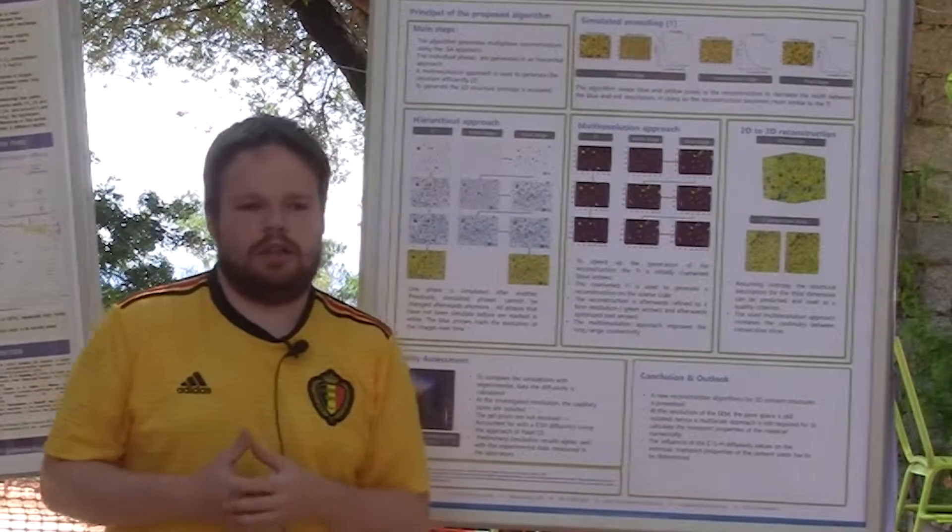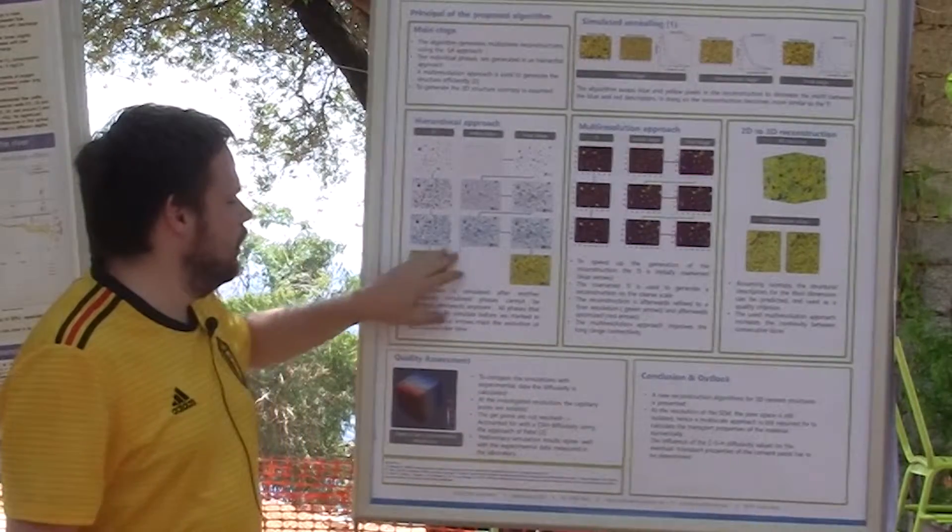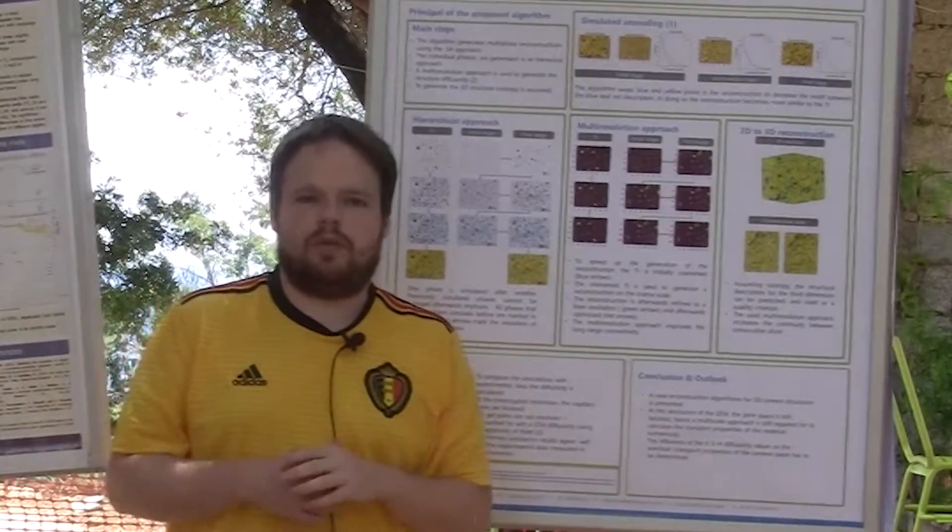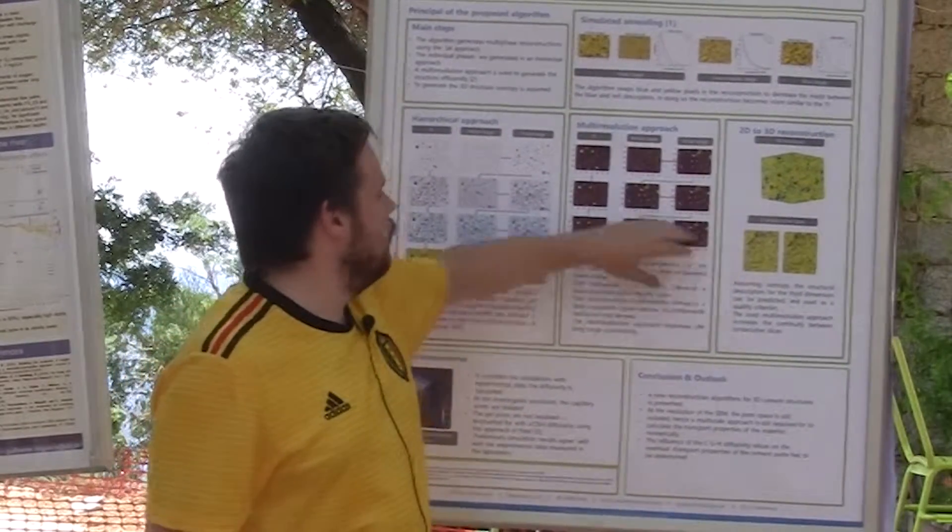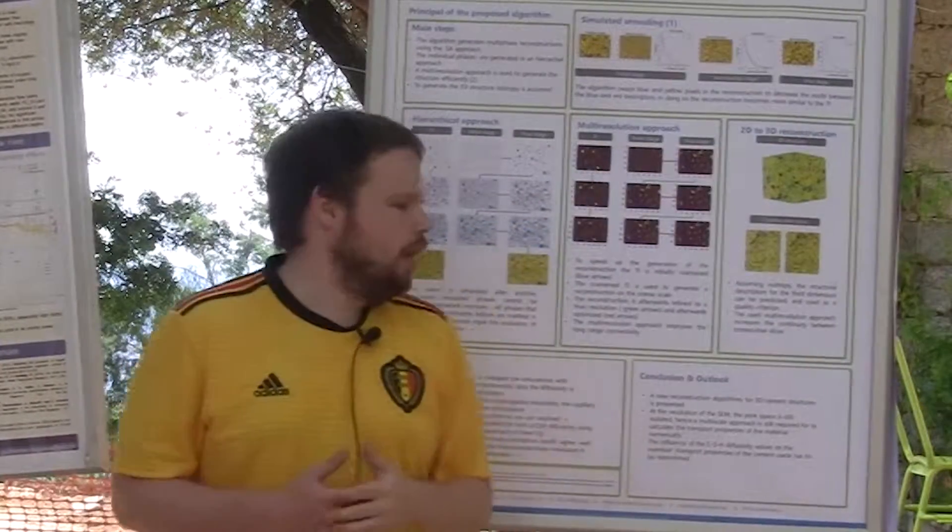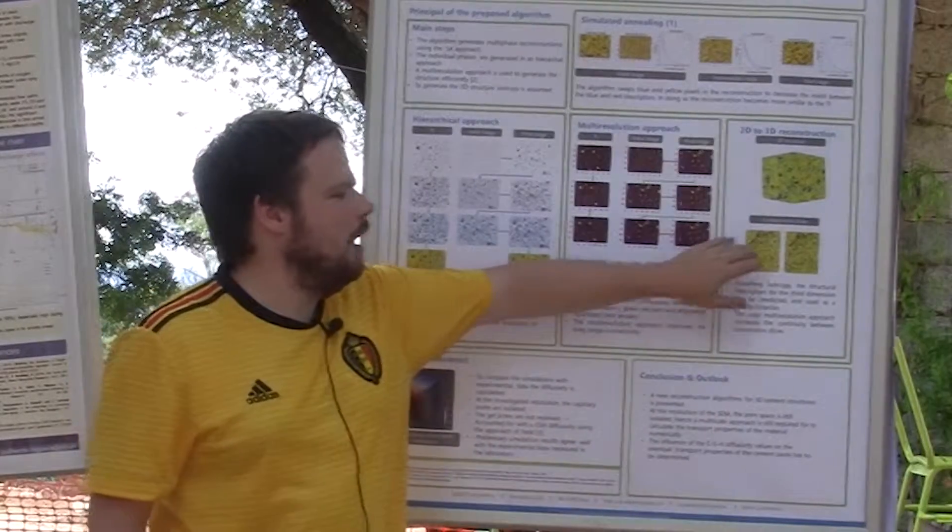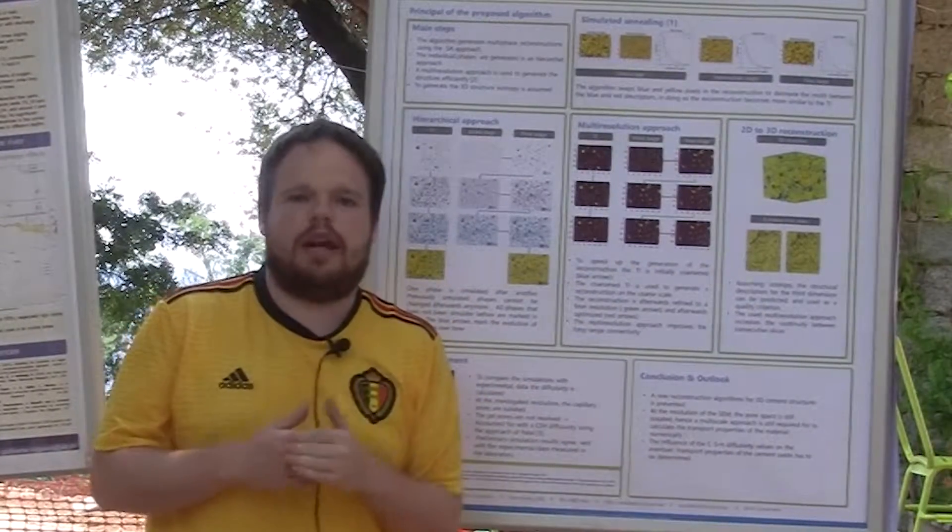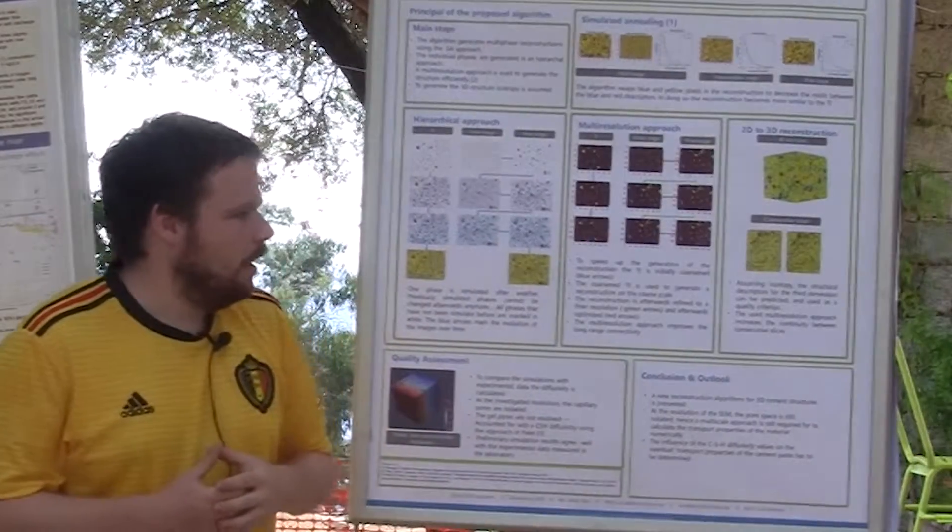If you assume a homogeneous medium, you can then also calculate from your simple 2D training image the behavior of the descriptor in the third direction. Then you can calculate from a single image with the same approach and make a 3D model out of it. Our algorithm is characterized by really high continuity between consecutive slices because all slices are generated in one go. This is an advantage compared to other algorithms which reconstruct the image slice by slice.